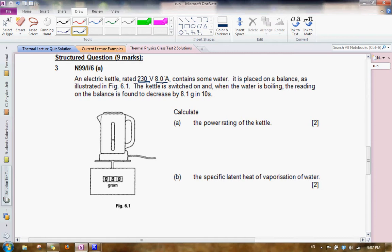For part A, you are asked to calculate the power rating, P, of the kettle. Since we are given the value of I and V, we can simply use power equals I times V, and we will have 8 amperes multiplied by 230 volts, and that would give us 1,840 watts. Just note that the units of power is given by watts, or alternatively, 1 watt is actually 1 joule per second.